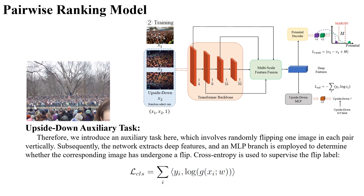Therefore, we introduce an auxiliary task here, which involves randomly flipping one image in each pair vertically. Subsequently, the network extracts deep features and an MLP branch is employed to determine whether the corresponding image has undergone a flip. By introducing this auxiliary classification task, the encoder of our model is able to extract more accurate features across various scenarios.